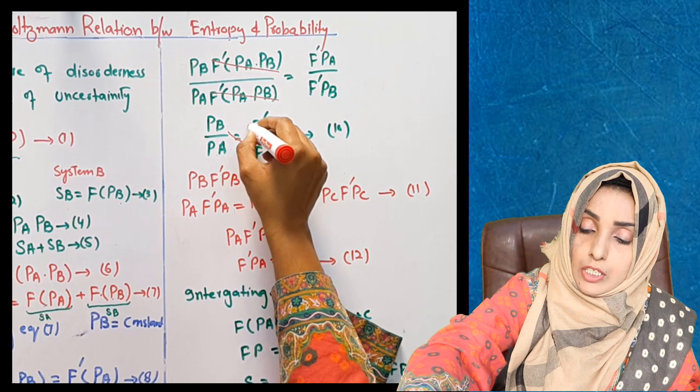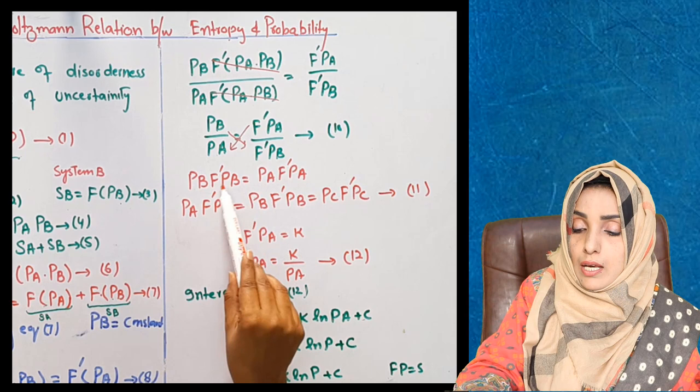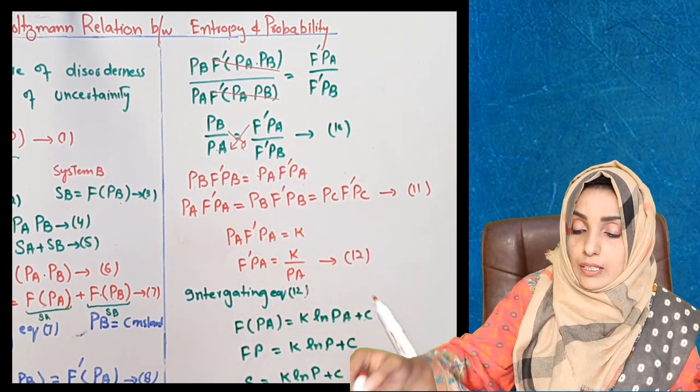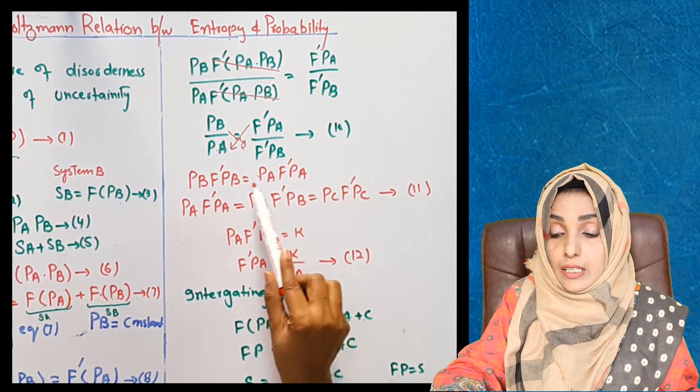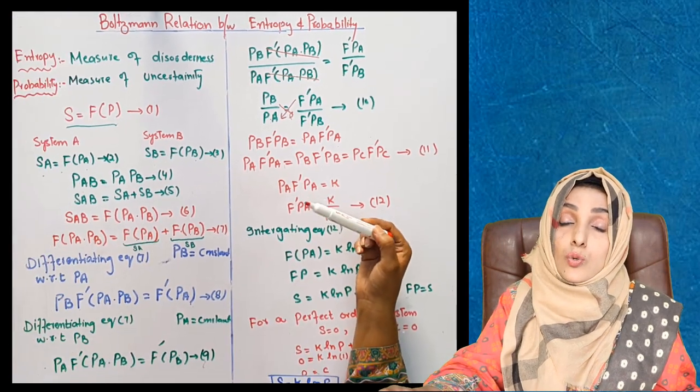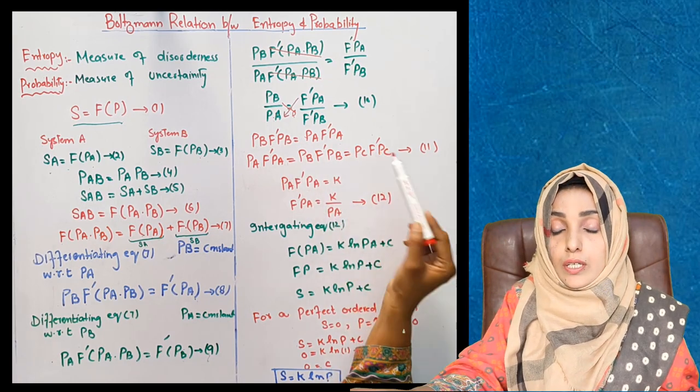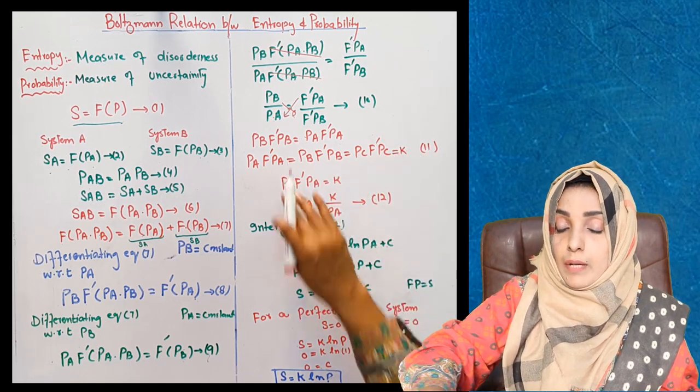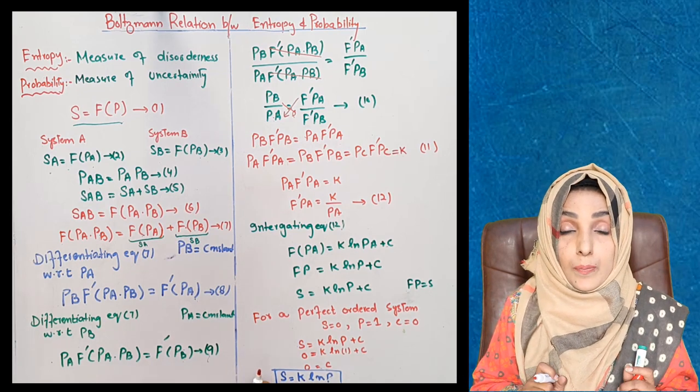If we do cross multiplication, we get a straight line equation where P(B) F prime P(B) is equal to P(A) F prime P(A). Now we can say that when any two systems are mixed, they become equivalent to each other. This means if we have more than two systems - 3, 4, 5 systems - they will be equivalent to each other in the same way. And the value of all of them will be equivalent to a factor K. Their value will always be constant if they are having the same kind of physical and chemical properties.